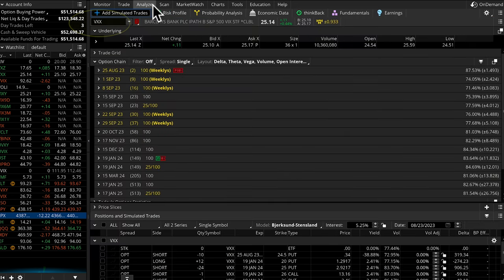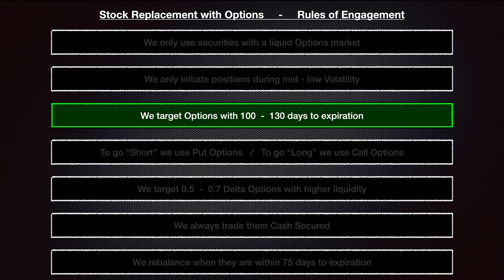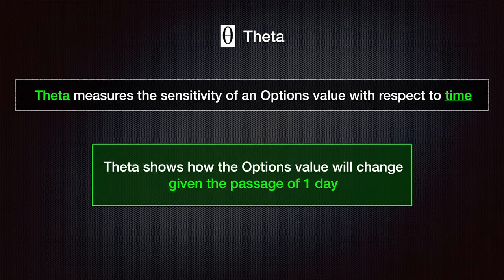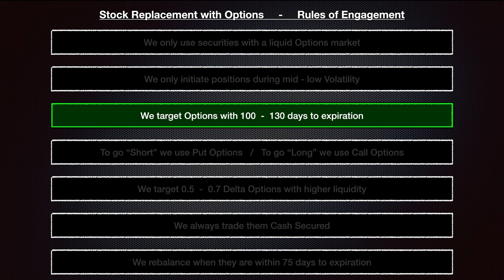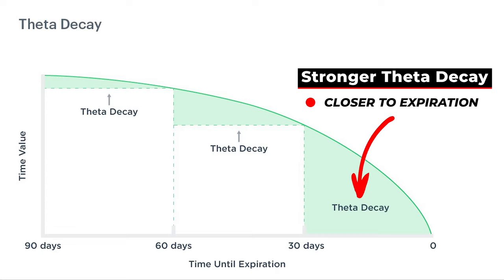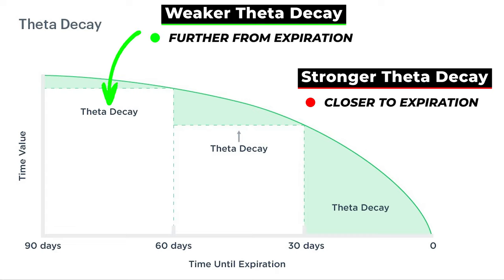We are using the VXX for our trade and we can see we've got all the option strings here that we can choose from. Our third rule is that we target options with 100 to 130 days to expiration. We do this because the longer dated contracts will lower the impact of what's called theta — how much an option contract's value will change given the passage of time. In the case of long VXX put options, theta will be slightly hurting our trade. So to combat this, we extend those days to expiration outside of about 100. Theta starts to affect options a lot more on the shorter end of the curve, so as long as we're playing a couple of months out, the negative impact of theta will be greatly reduced.